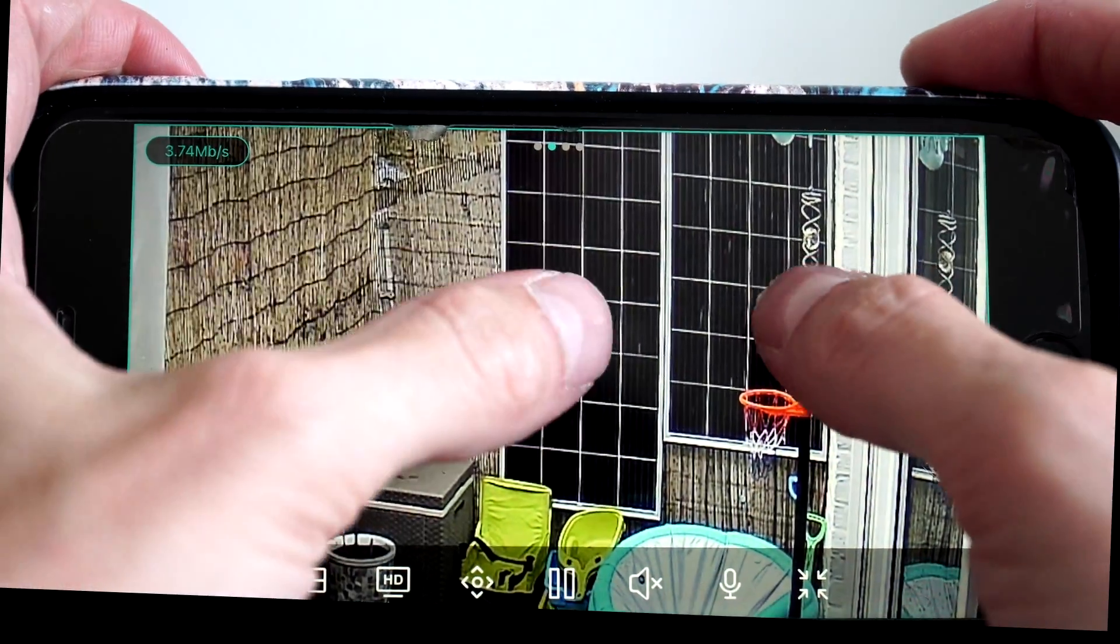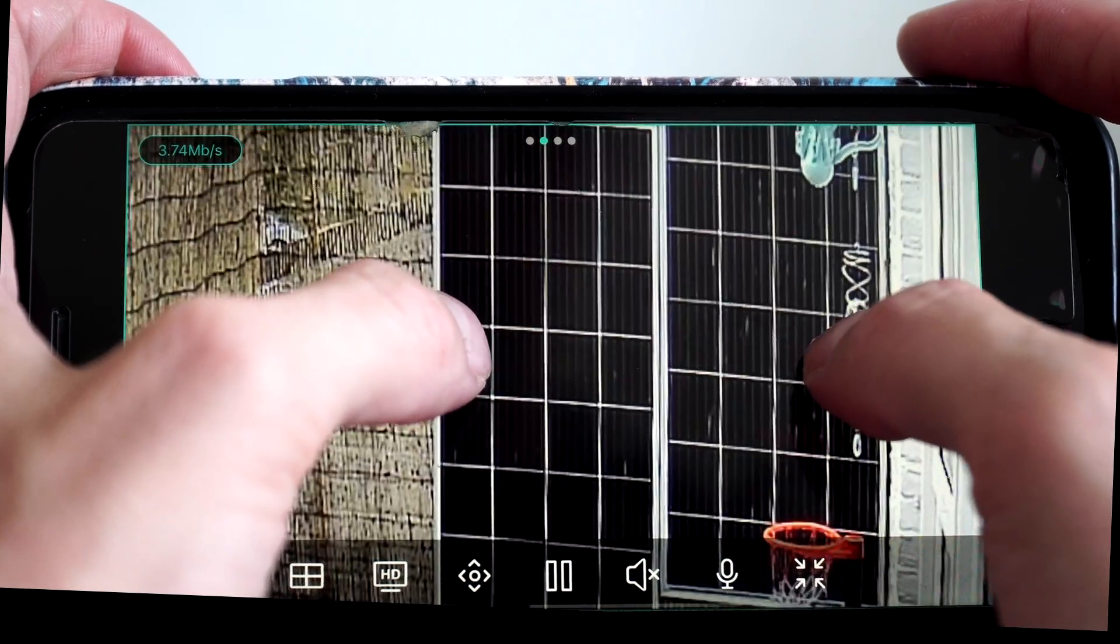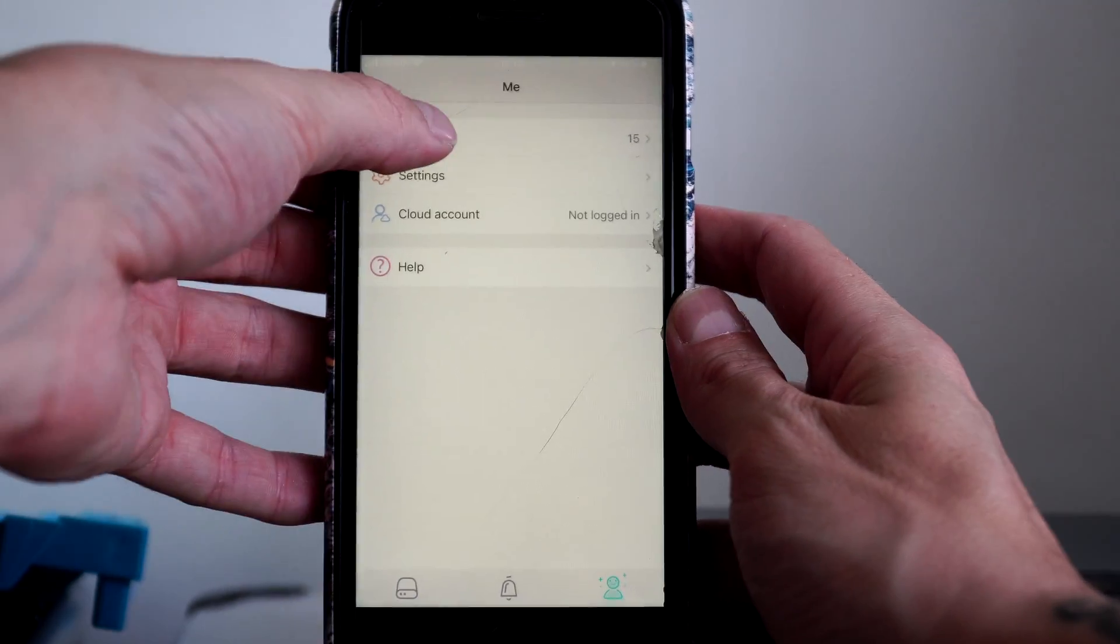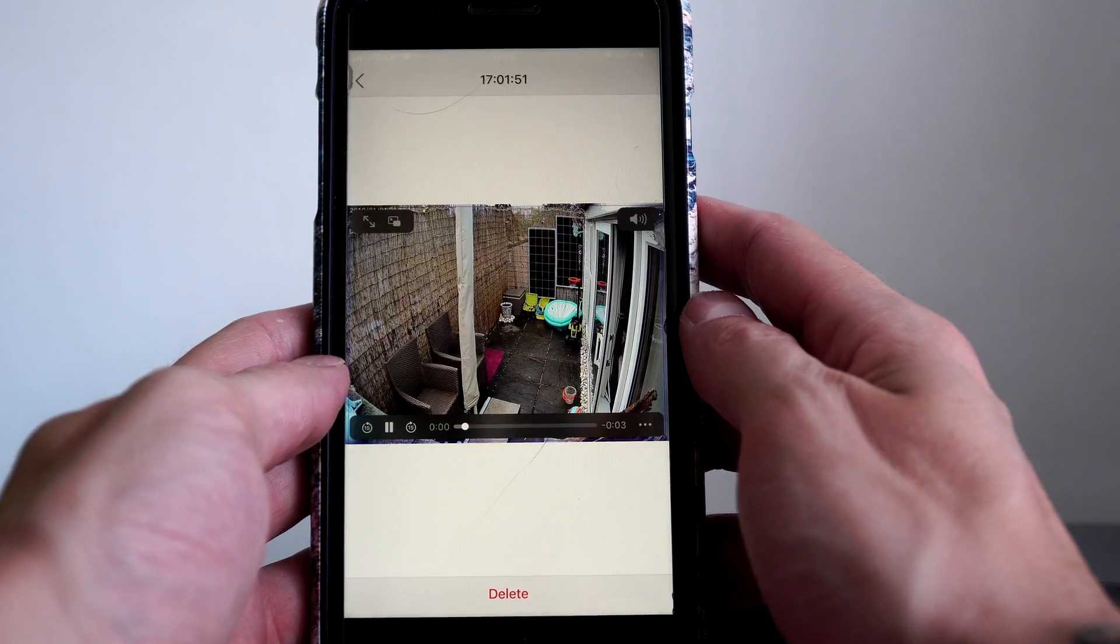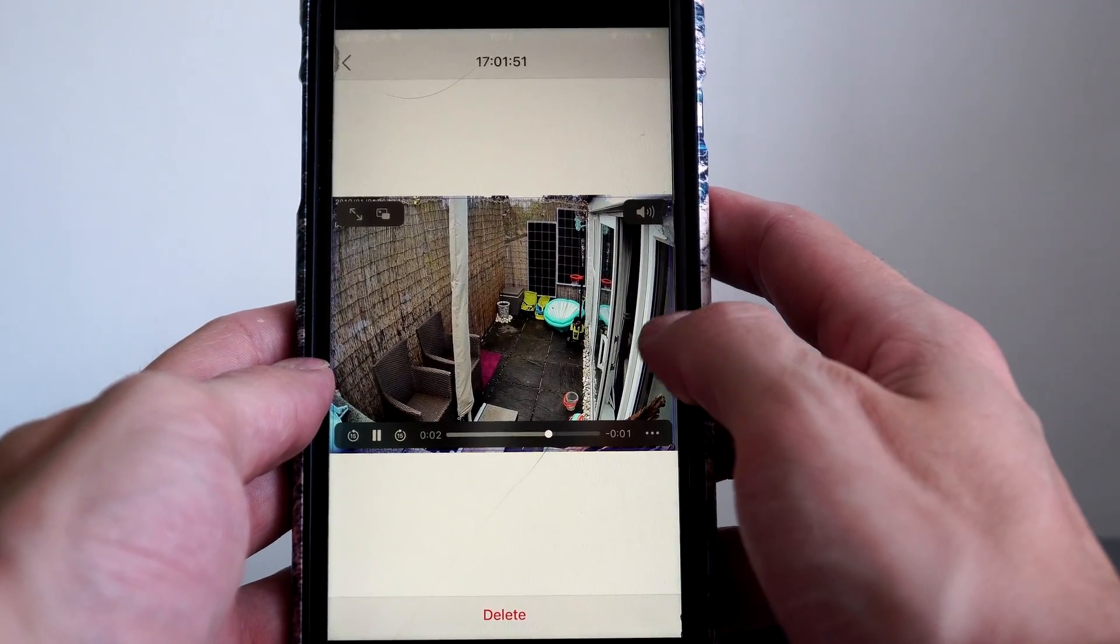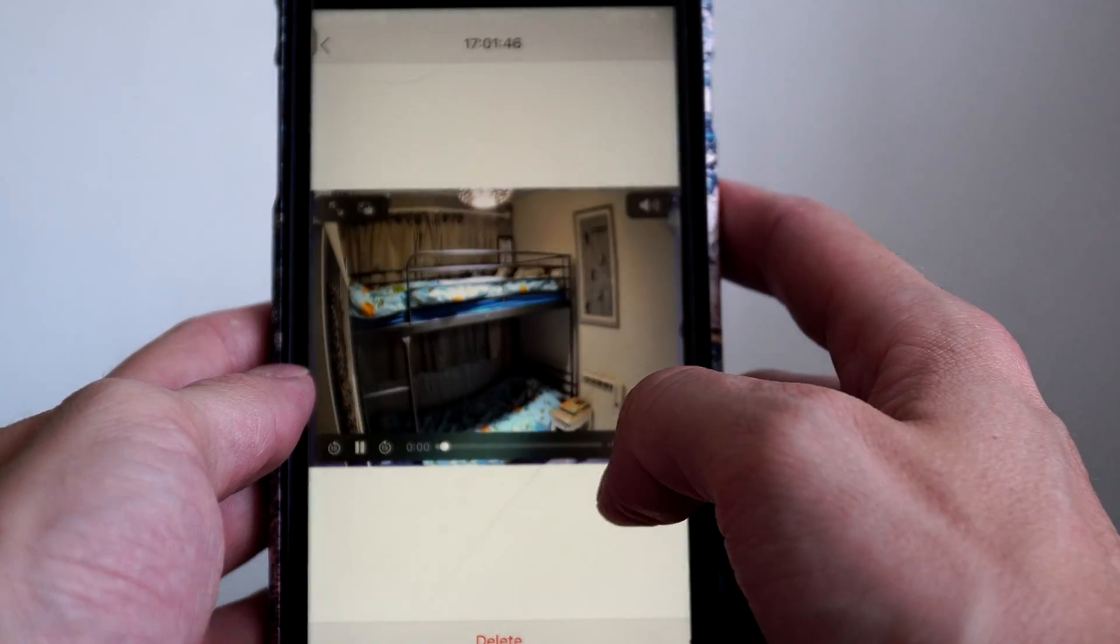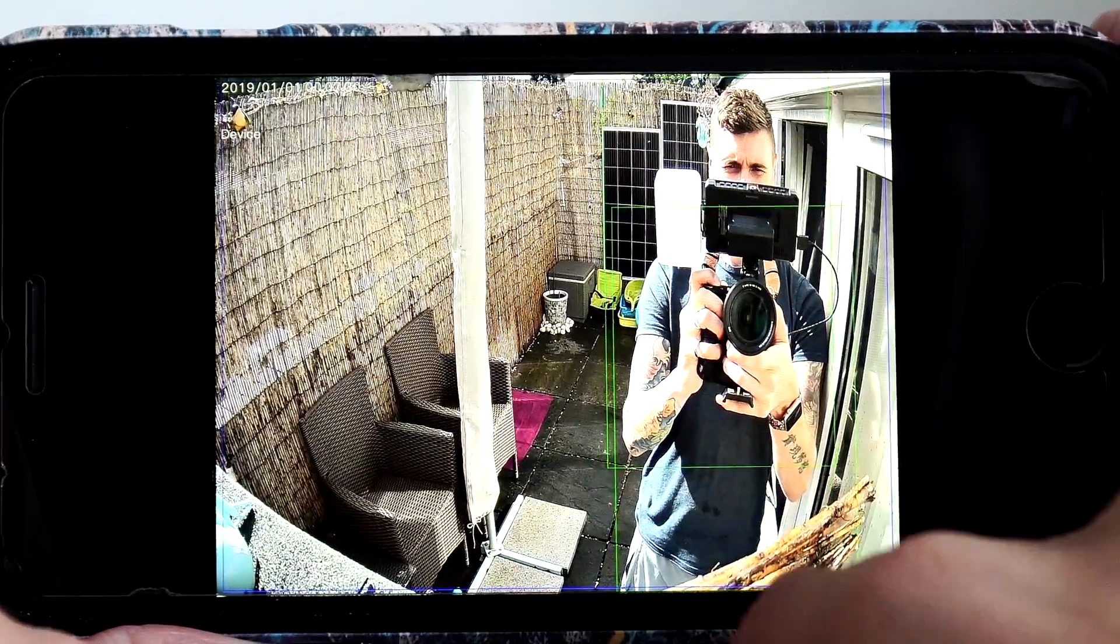As my balcony is only narrow, it does a good job in capturing most things in it. Now on the app, you go to the little person icon in the bottom right corner, and then images, this is where my footage is saved from the motion detection, or from me pressing the record button on the screen for anything that I wanted to manually record.